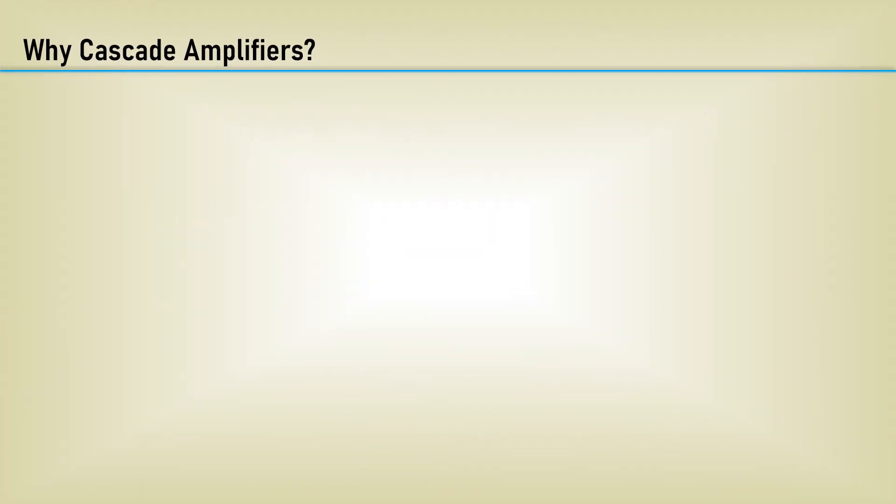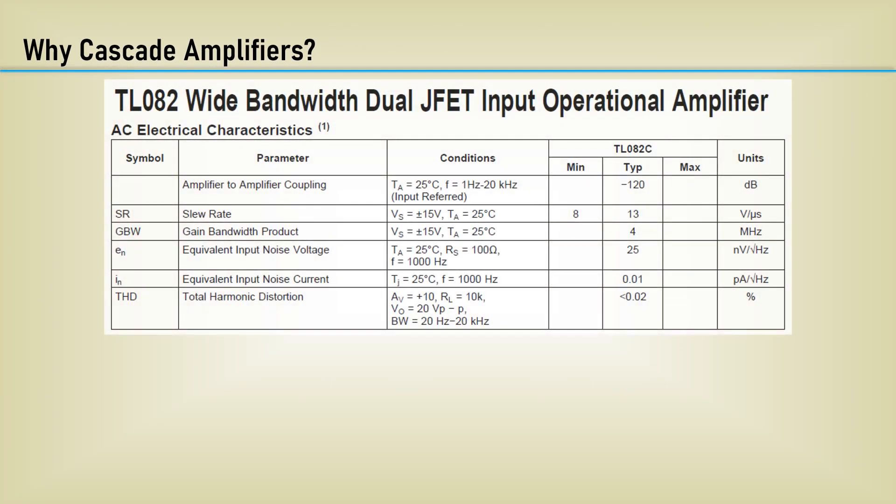Why cascade amplifiers? Recall from the Understanding Specs video, we discussed the Unity Gain Bandwidth, or Gain Bandwidth Product. It's the frequency where the open loop gain drops off to 1.